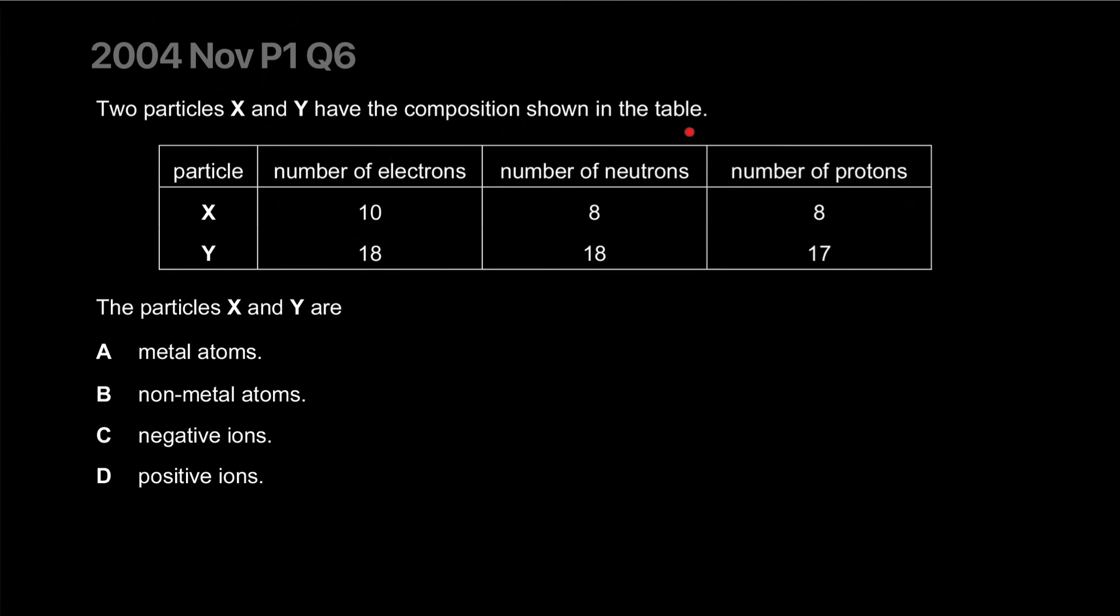Two particles X and Y have the composition shown. Number of electrons, number of neutrons, number of protons. X has eight protons, so it's oxygen. Right now it has two extra, so it gives it a negative charge. Number of neutrons is also eight. This is definitely oxygen ion.